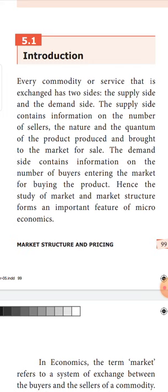For a sale to take place, it depends upon demand and supply conditions. From the demand side, we get information like how many buyers are entering the market to buy products, and what is the nature and social class of the buyers. All these factors will decide the buying of a service or a commodity. So it is very important for us to understand the market first.